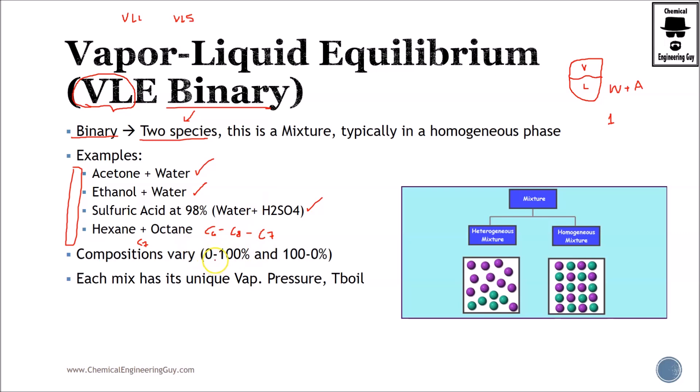Compositions of the more volatile material will be from 0 to 100% and the least volatile will be 100 to 0%. And it's awesome that each one, depending on the composition, will have different vapor pressure and vapor temperature of vaporization.